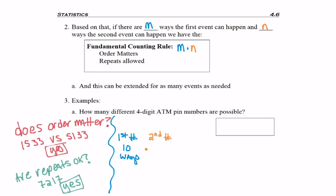So now I need to pick the second number in my PIN, and there's still 10 ways because repeats are possible. Now if I wasn't allowed to have a repeat this would be different, and we'll actually see that method later. But I need to pick the third number in my PIN and the fourth number in my PIN.